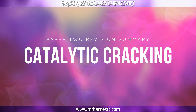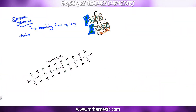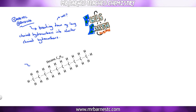The next section looks at catalytic cracking, which is simply the breaking down of long-chain hydrocarbons into shorter-chain hydrocarbons. Looking at decane, which has the formula C₁₀H₂₂: we have a large supply of long-chain alkanes, but we don't have as much demand for them.